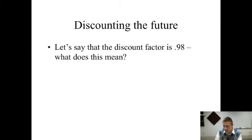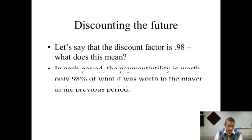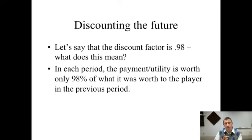If delta is 0.5, it means any payment received in the next period is only worth half of what the same payment in this period is worth to the player. So a discount factor of 0.98 means the payment or utility is worth only 98% of what it was worth to the player in the previous period.